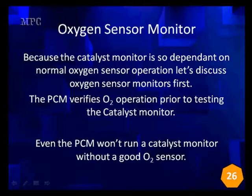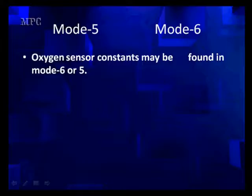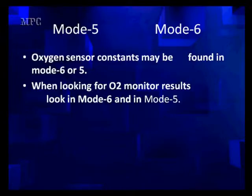Because the catalyst monitor is so dependent on normal oxygen sensor operation, let's discuss oxygen sensor monitors first. The PCM verifies the O2 operation prior to testing the catalyst monitor and prior to doing any testing. So even the PCM won't run a catalyst monitor without a good O2 sensor, and that's something you should be aware of. Sometimes we find oxygen sensor data constantly stored in mode 5, sometimes in mode 6 — it's the option of the manufacturer, they can do it either way.